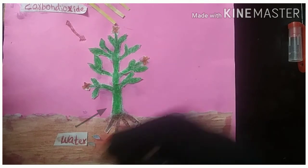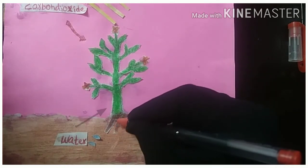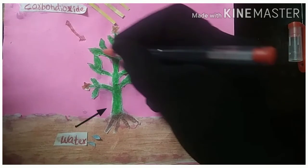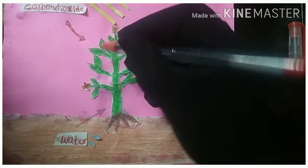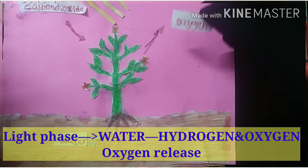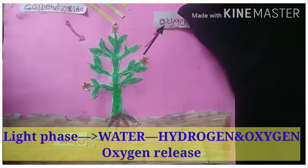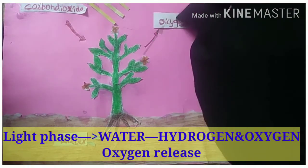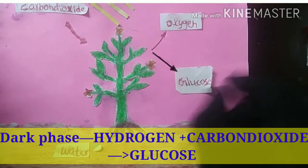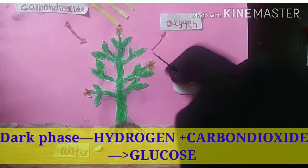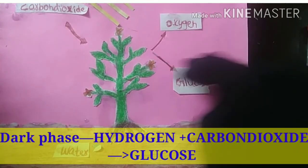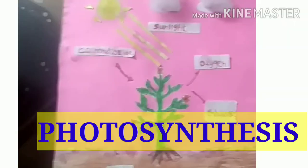Water molecules from the soil reach the root, then pass through the xylem and reach inside the leaves. In the light phase, the water molecule splits into hydrogen and oxygen, and oxygen is released. In the dark phase, this hydrogen molecule combines with carbon dioxide to form glucose by using ATP.